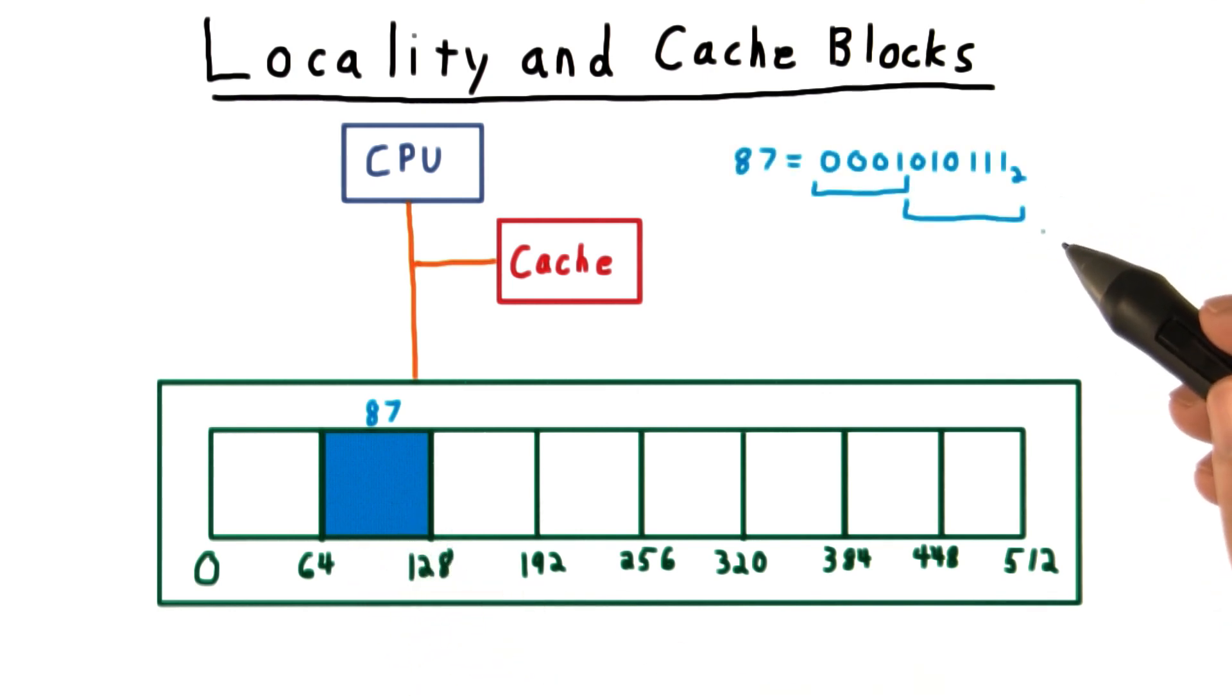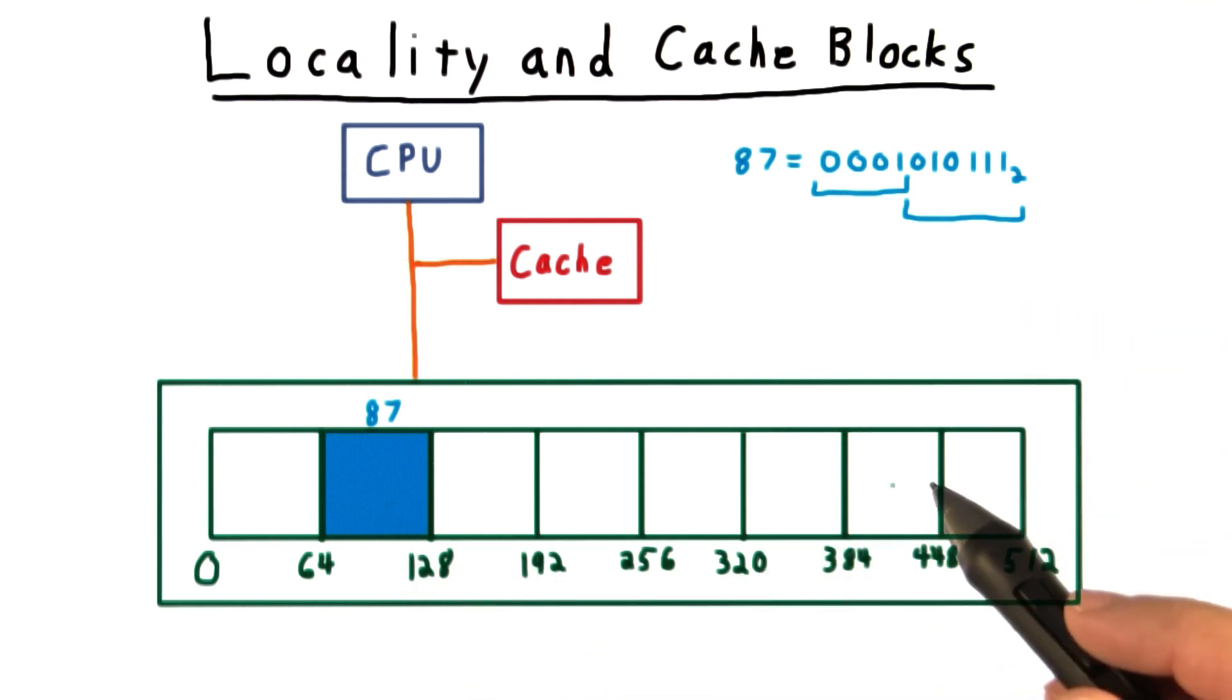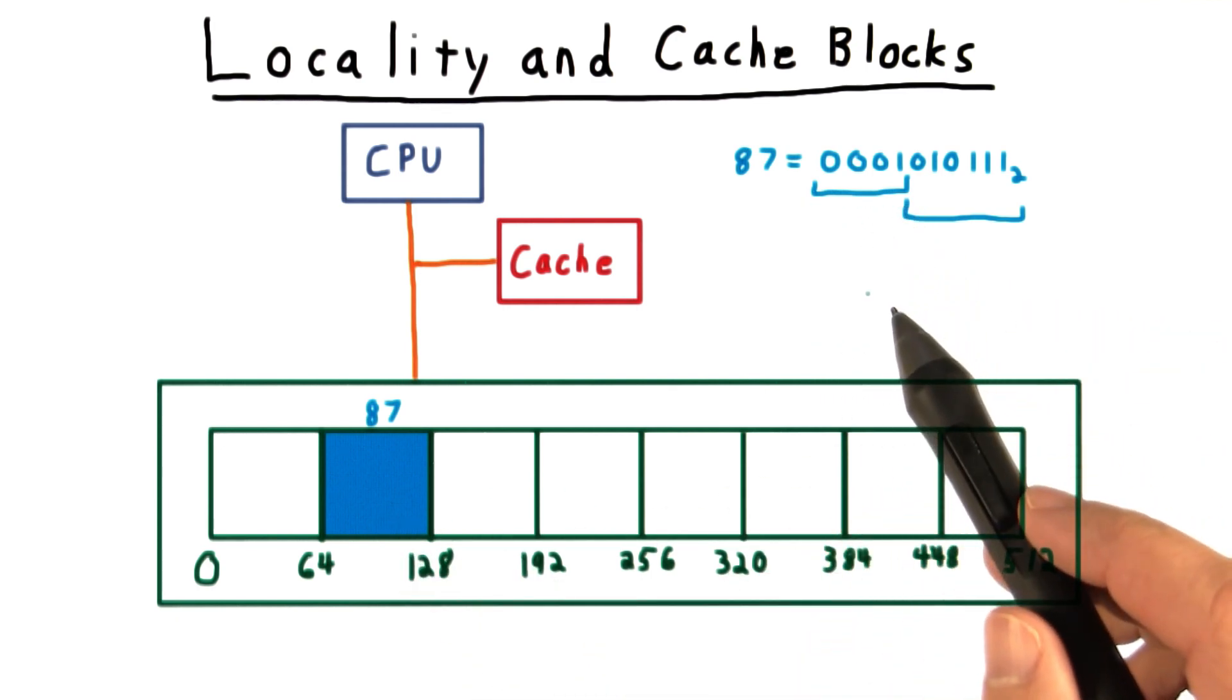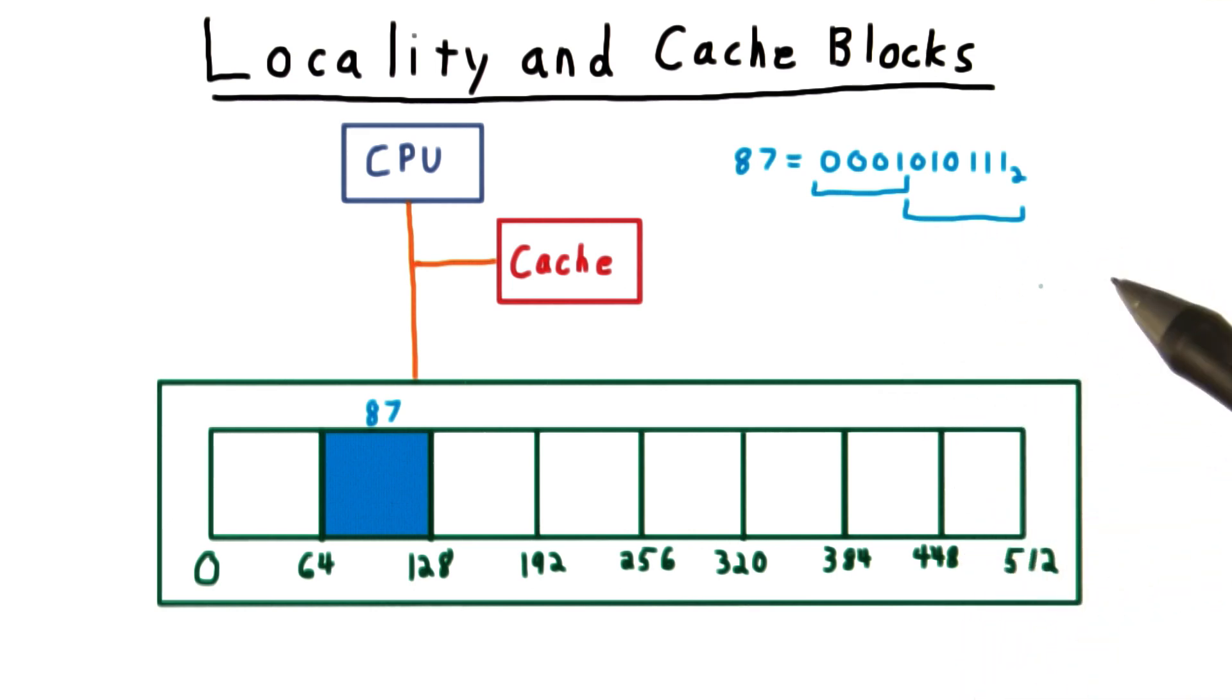Well, the answer is that it makes it much easier to figure out what is in the cache and where. The size of the cache block is always a power of 2, so we can read which cache block we belong to just by looking at the higher order bits. The lower order bits are called the offset and tell us where, within a given cache block, the data we want is.